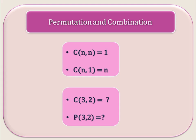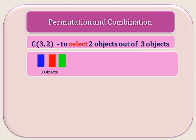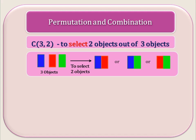What is C(3, 2)? It means out of 3 objects we have to select 2 objects. Consider the 3 objects — the possibilities are: select the first two, or the first and third, or the second and third. So there are 3 possibilities. Therefore C(3, 2) equals 3.